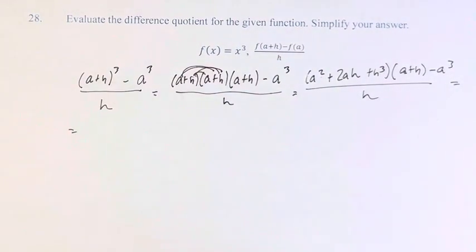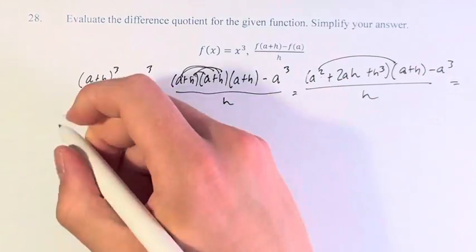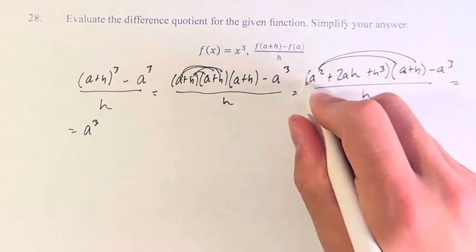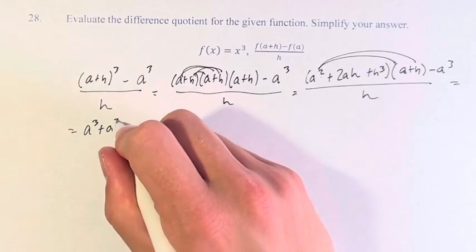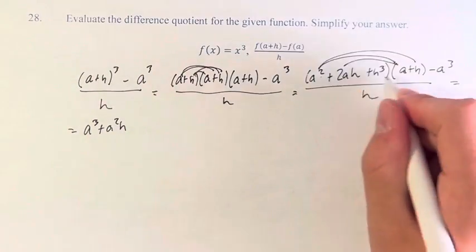Next, we want to multiply these two together. So we have a squared times a is a cubed plus a squared h plus 2 a squared h.